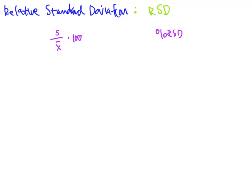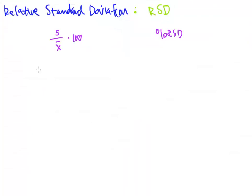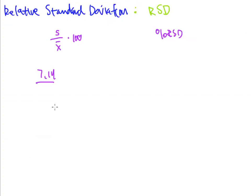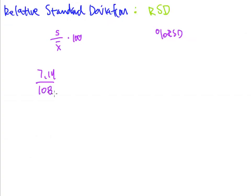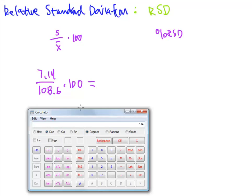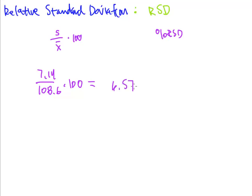In this previous problem, we had a standard deviation of 7.14 and we had an average of 108.6. I'm going to take those two numbers, divide them, and multiply by 100. So 7.14 divided by 108.6 times 100 equals 7.57, and that's my percent RSD.